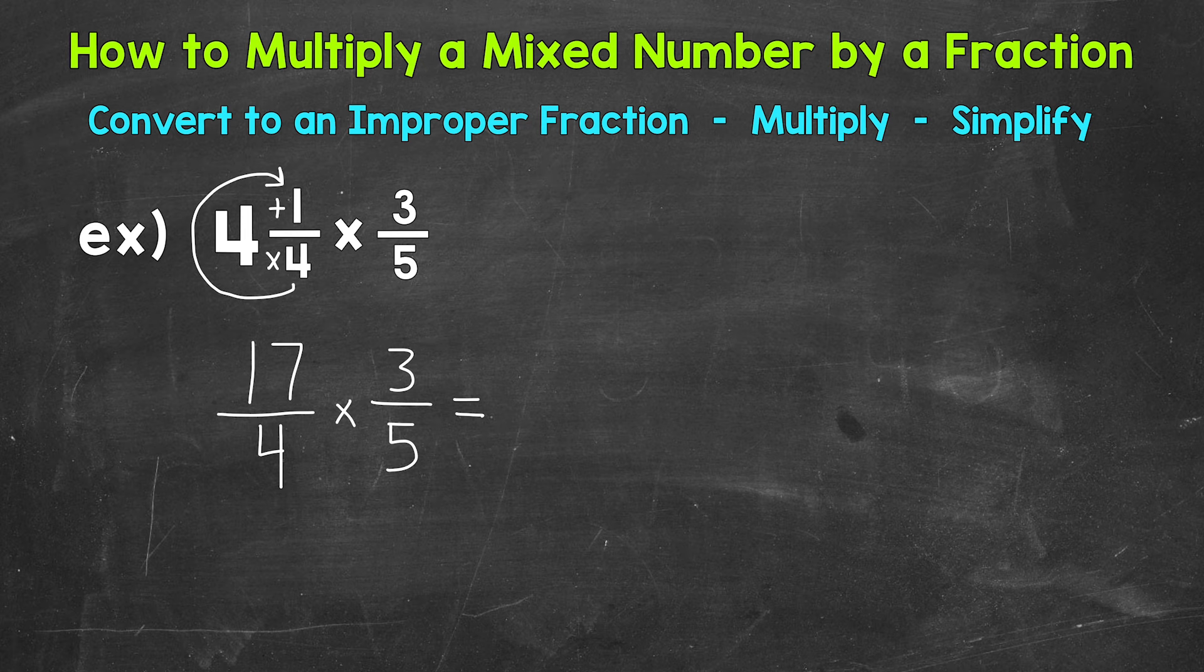Let's start with the numerators, the top numbers. So 17 times 3, that gives us 51. Our denominators, the bottom numbers, we have 4 times 5, which gives us 20. So we get to 51 20ths.